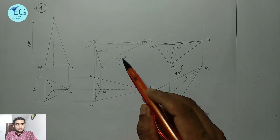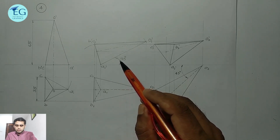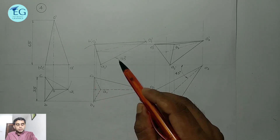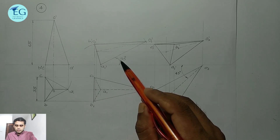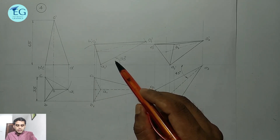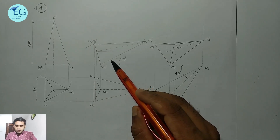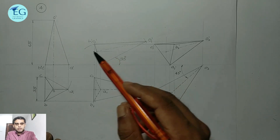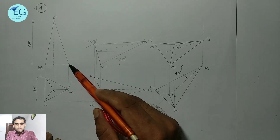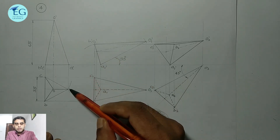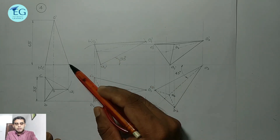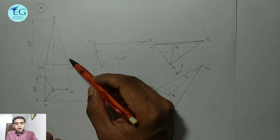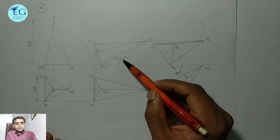The next step is the first change. HP is the resting surface and there are changes in HP. The slant edge containing that base corner makes an angle of 30 degrees with HP. The slant edge A-O' and the inclination of A-O' is 30 degrees.